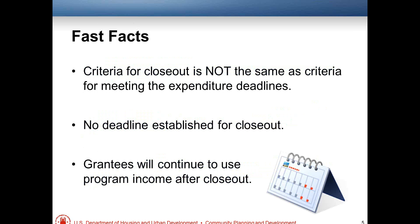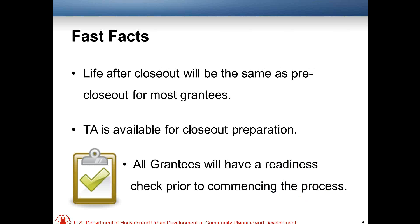Some quick fast facts about closeout. The criteria for closeout is not the same as for meeting expenditure deadlines — just because your expenditure deadline has passed does not mean you are ready to close out. There is no deadline established for closeout at this point, and grantees will continue to use program income after closeout. For most grantees, life after closeout will be the same as before, but you will no longer need to submit the QPR quarterly — only annually. TA is available for closeout preparation, and all grantees will have a readiness check prior to commencing the closeout process.